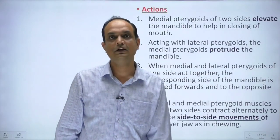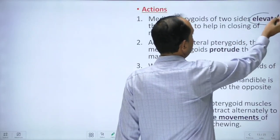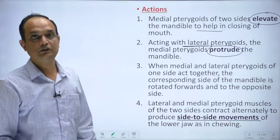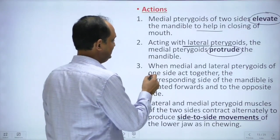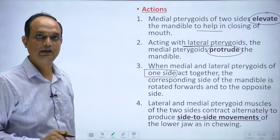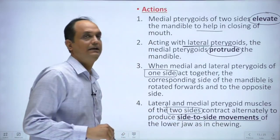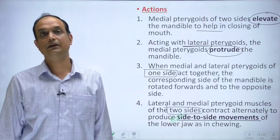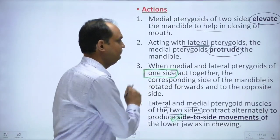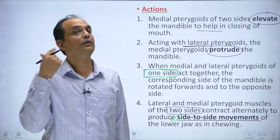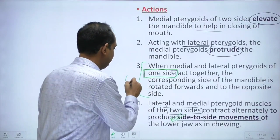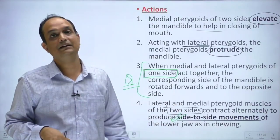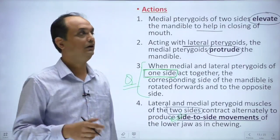The actions of the medial pterygoid are: elevation of the mandible, helping to close the mouth; protrusion of the mandible along with the lateral pterygoid; and two additional actions with the lateral pterygoid. When both sides contract together, there is side-to-side movement of the mandible during chewing. When only one side contracts (unilateral contraction of medial and lateral pterygoid), the mandible swings and the chin moves to the opposite side.